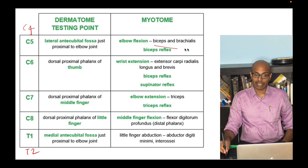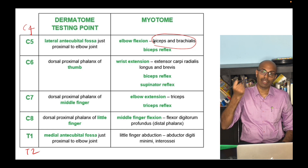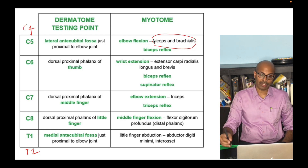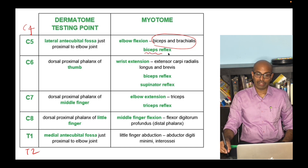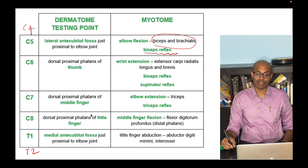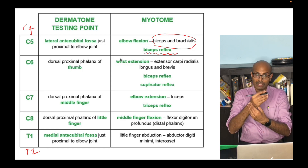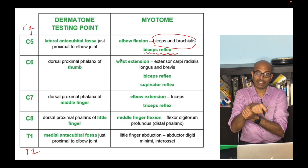C5 corresponds to the brachialis and biceps muscles, which are responsible for elbow flexion. The reflex you will test for C5 is the biceps reflex.